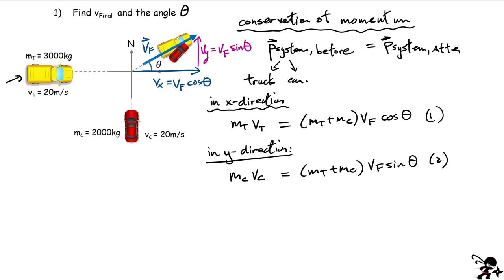So we have two equations and two unknowns: vf and the angle theta. What you can do is divide equation two by equation one. When you do that, the vf's cancel and you're left with a single expression in terms of theta: the left side becomes tangent(θ), and the right side becomes mc·vc divided by mt·vt.